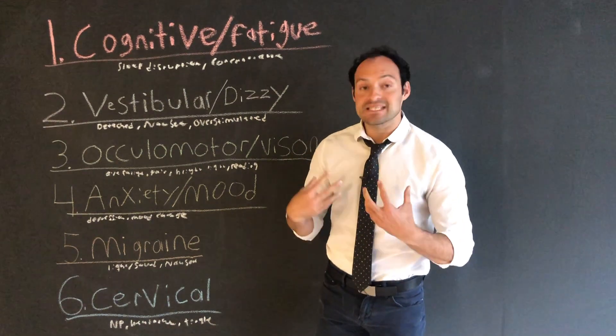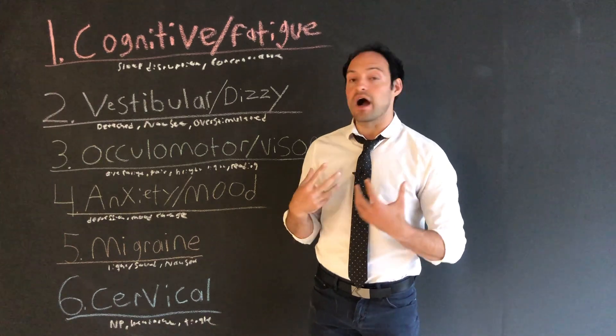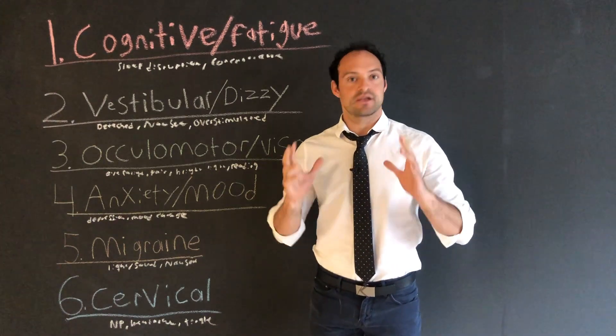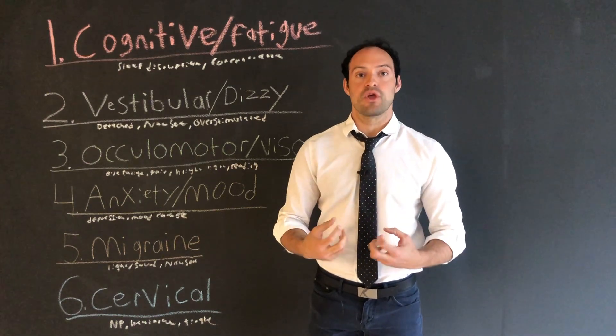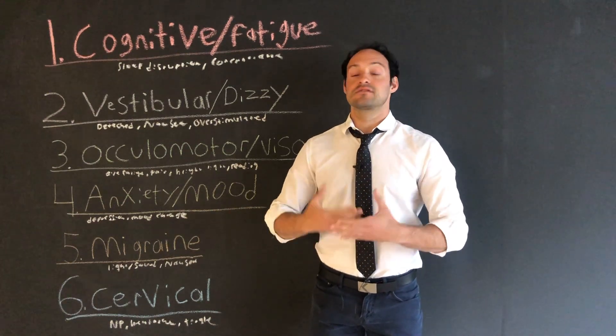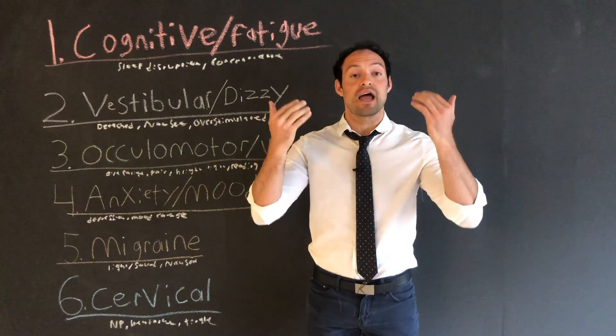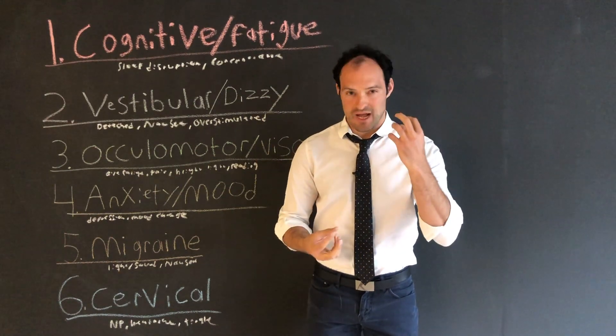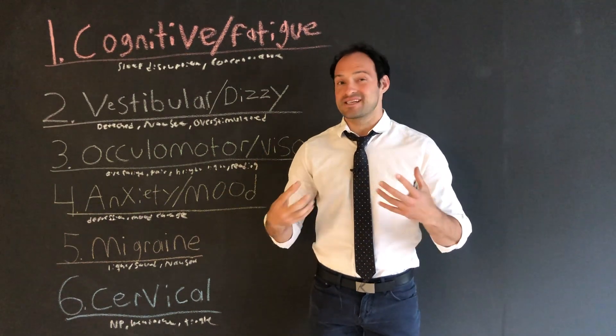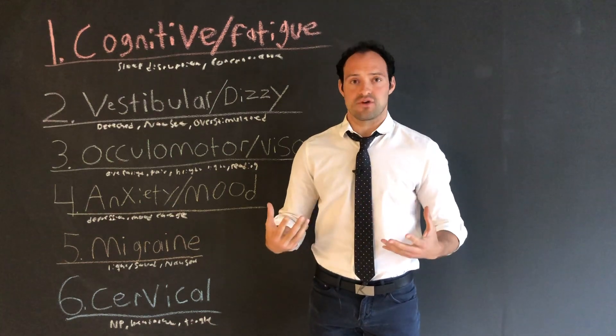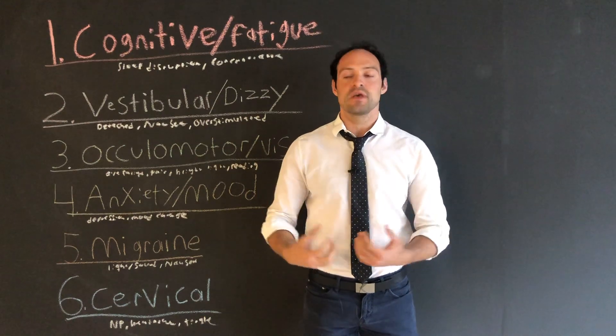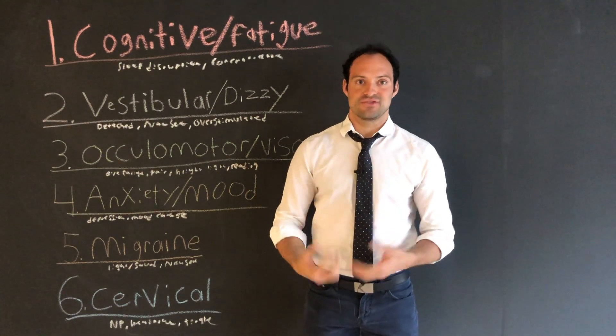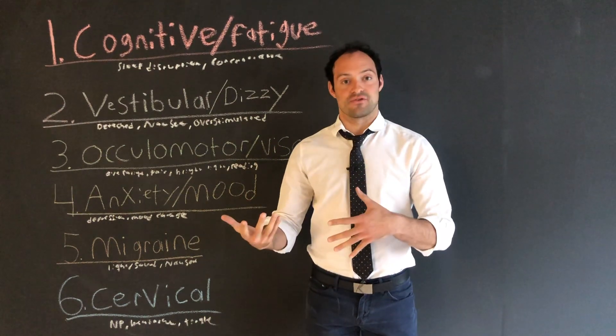Now, the next category of concussion would be the oculomotor or vision category. Patients suffering from an oculomotor concussion are going to have things such as double vision, blurry vision, dry eyes, pressure behind the eye. Reading and concentration becomes very difficult. You might start experiencing bad headaches every time you start to read. And this category needs to be treated very differently than the other categories would.